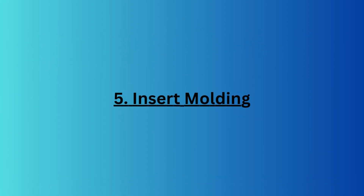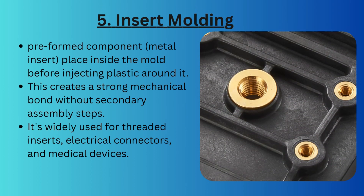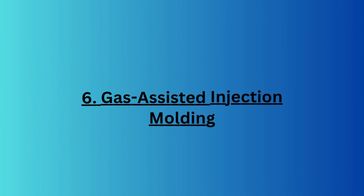Similar to overmolding, in insert molding we place a metal component — called a preform — into the injection mold and add plastic material around the metal. This creates a strong mechanical bond without a secondary assembly step. It is widely used for threaded inserts, electrical connectors, and medical devices where assembly strength and rigid bonding are important.